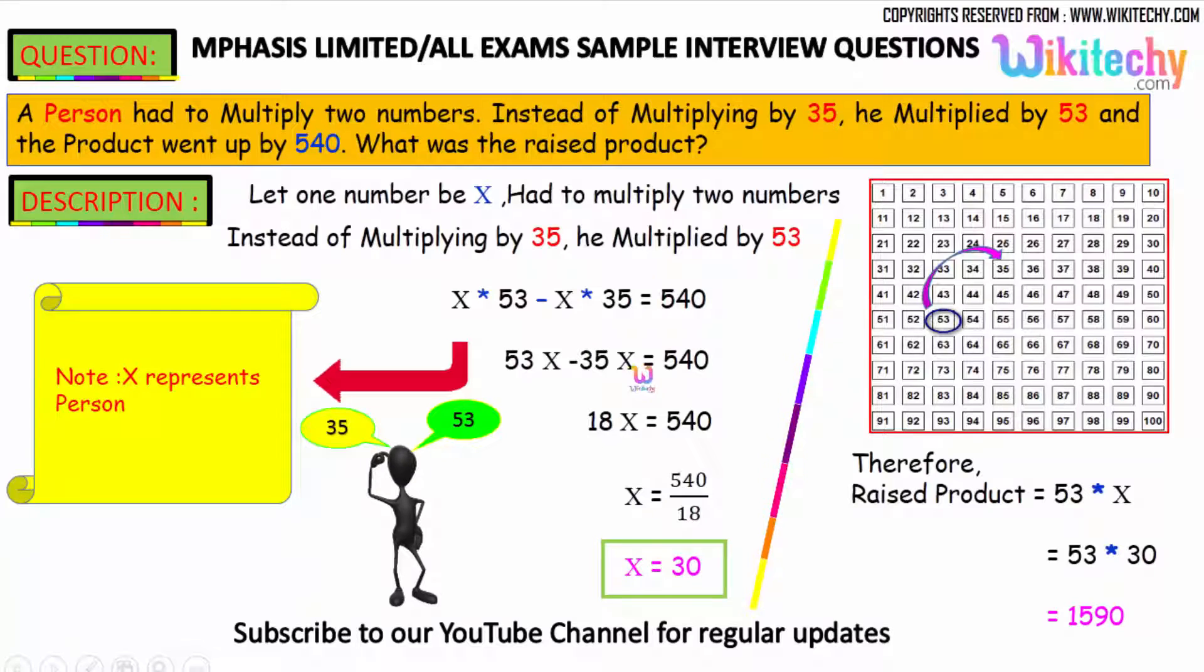So 53x minus 35x is equal to 540. 18x is equal to 540 and x is equal to 540 divided by 18. So x is equal to 30. The value of x is equal to 30.